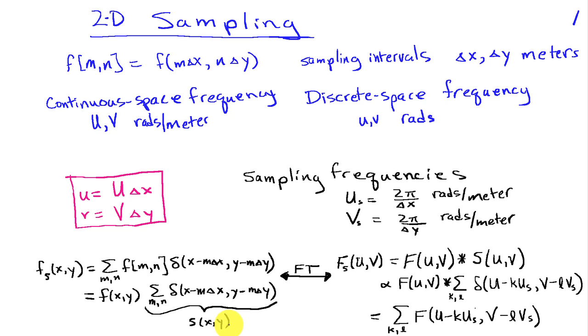Just like it was in one dimension, an impulse train transforms to an impulse train. The spacing is inversely proportional because originally they were spaced by delta x and delta y. In the frequency domain they're spaced by 2 pi over delta x and 2 pi over delta y. This convolution is straightforward because we're convolving with impulses, so that simply shifts this function to the location of the impulses. We end up with our sample signal spectrum proportional to the sum over k and l from minus infinity of the original signal spectrum shifted to k u sub s and l v sub s and adding all those up.